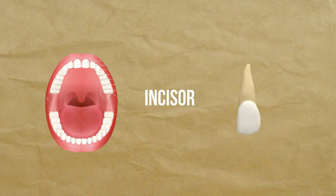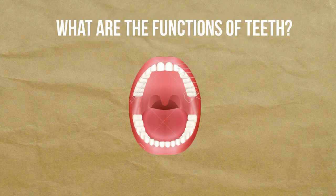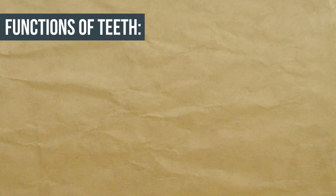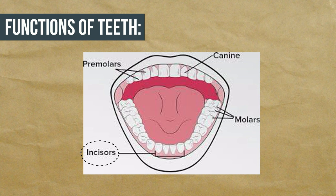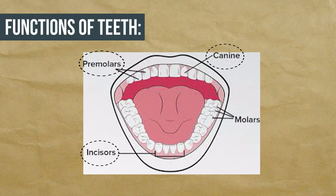Your teeth look different from one another because they are designed to do different things. The functions of teeth are: incisors cut food like a knife; canines grip and tear food; premolars crush and grind food; and molars also crush and grind food and help to swallow food.